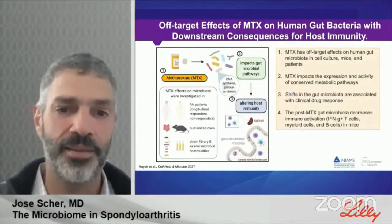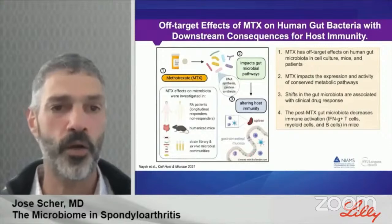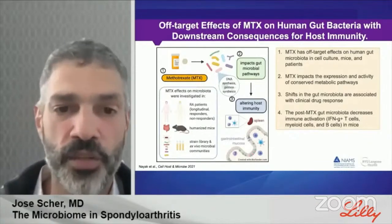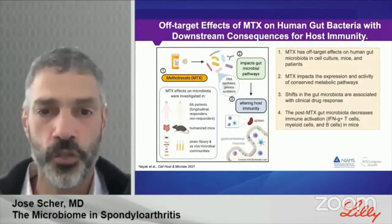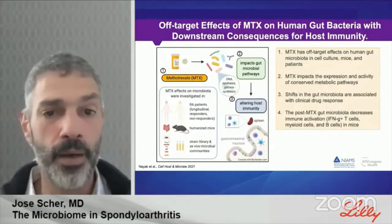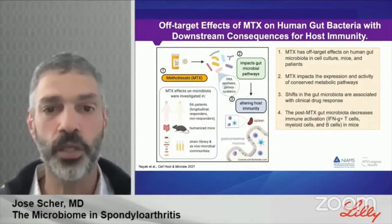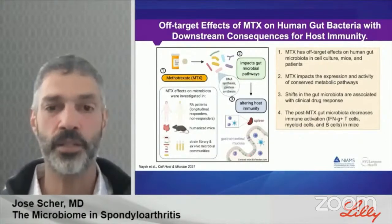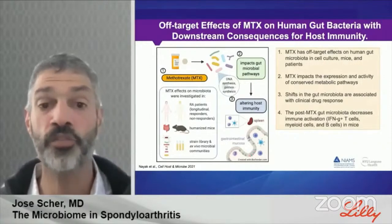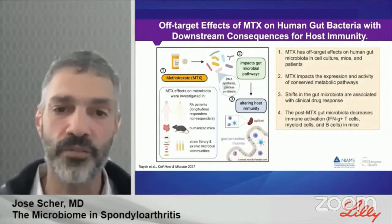The model is quite imperfect, because in collaboration with a group at UCSF we just showed that methotrexate at higher doses also has off-target effects on human gut microbiota — in cell cultures, in mice, and in patients. This was less about overall community structure of gut bacteria and more about impacting the expression of conserved metabolic pathways and their activity. Importantly, some of these shifts also associated with methotrexate response, suggesting that bacteriostatic off-target effects of methotrexate on the gut microbiota can have immune consequences.